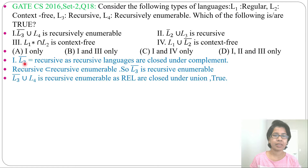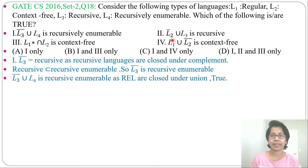To summarize: L3 is a recursive language. Its complement is recursive. Recursive is a subset of recursive enumerable, so L3 complement can be recursive enumerable. Recursive enumerable union recursive enumerable will be recursive enumerable. Statement 1 is true.